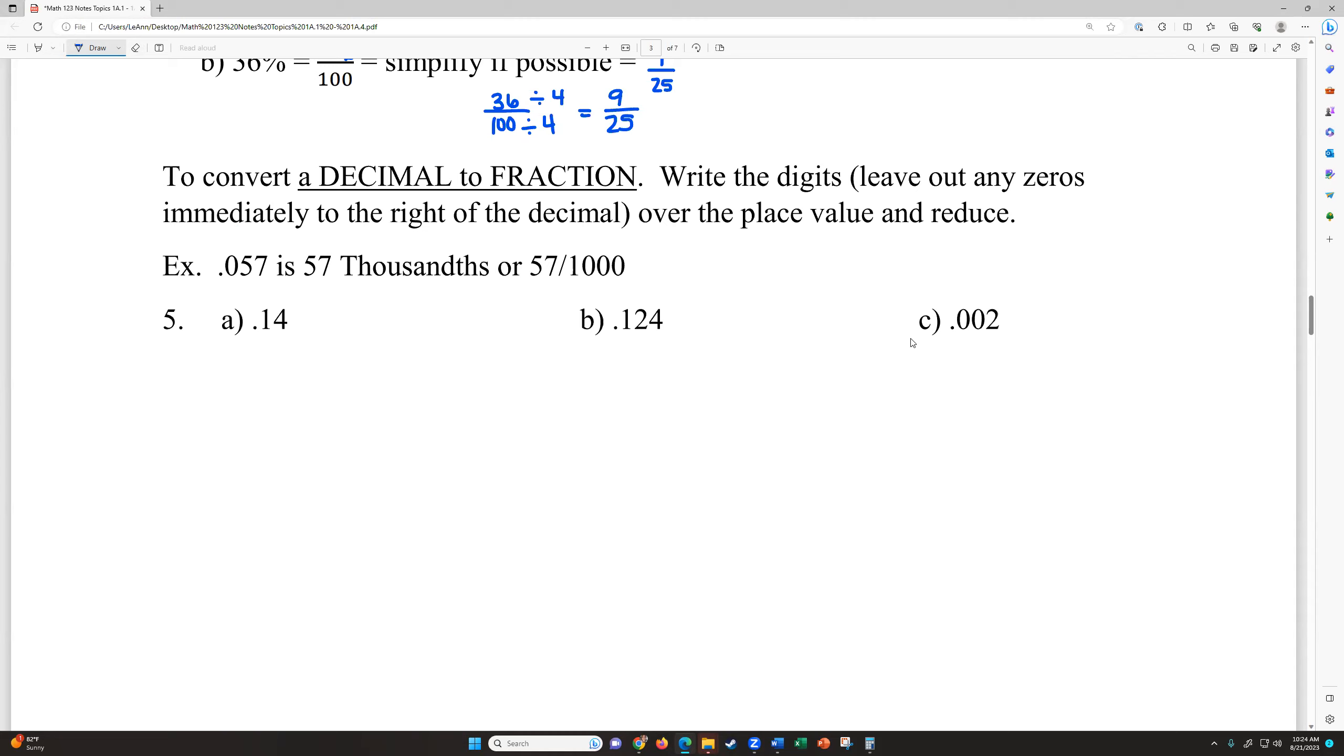So what we're saying here is 0.057, the last place value is the one you're going to focus on. So this is read as 57 thousandths or we can write that as 57 over a thousand.